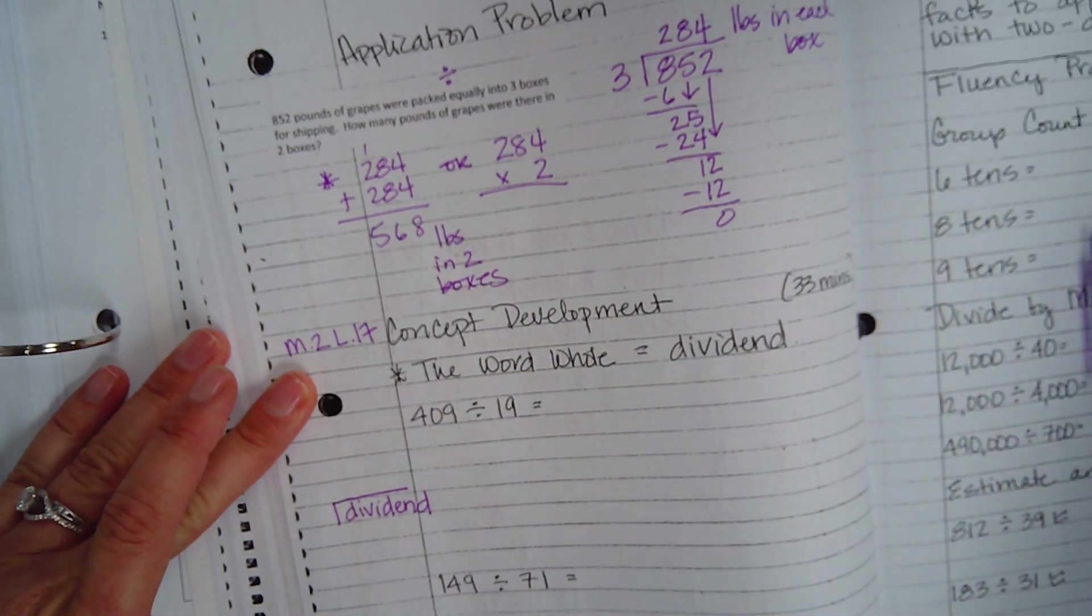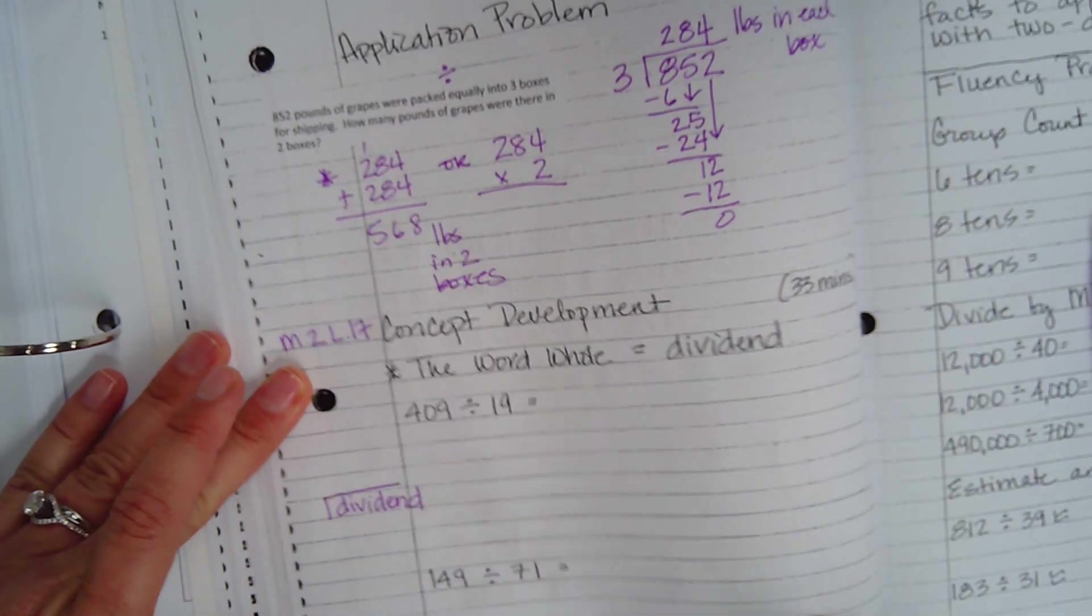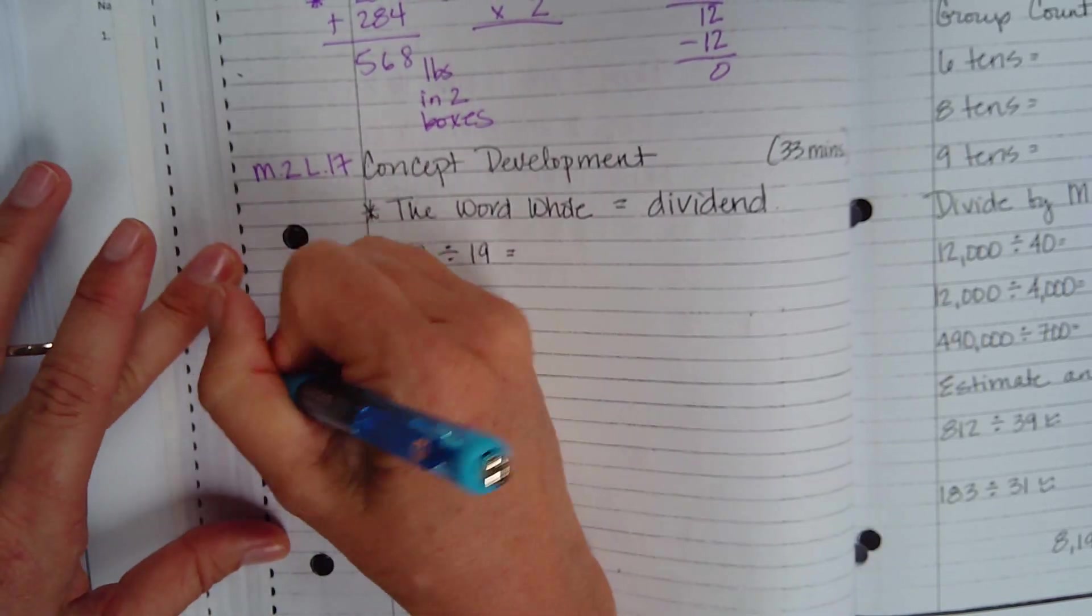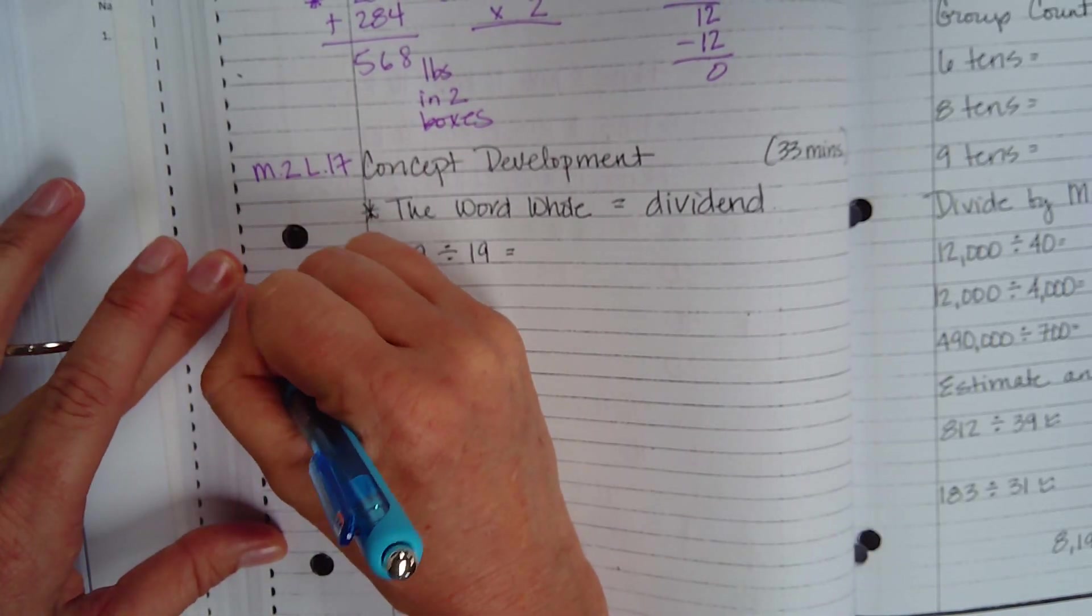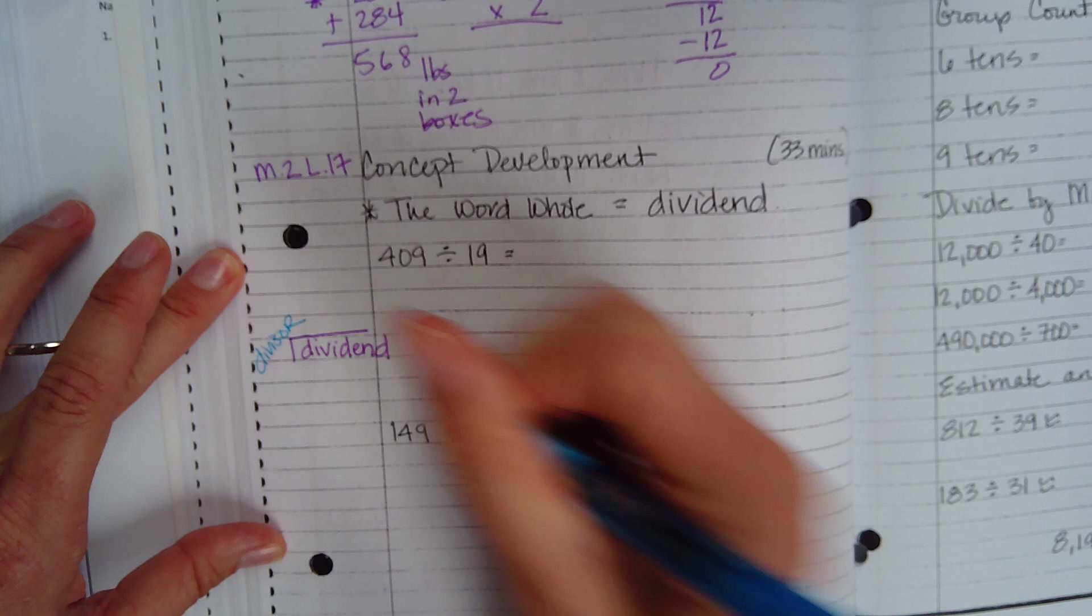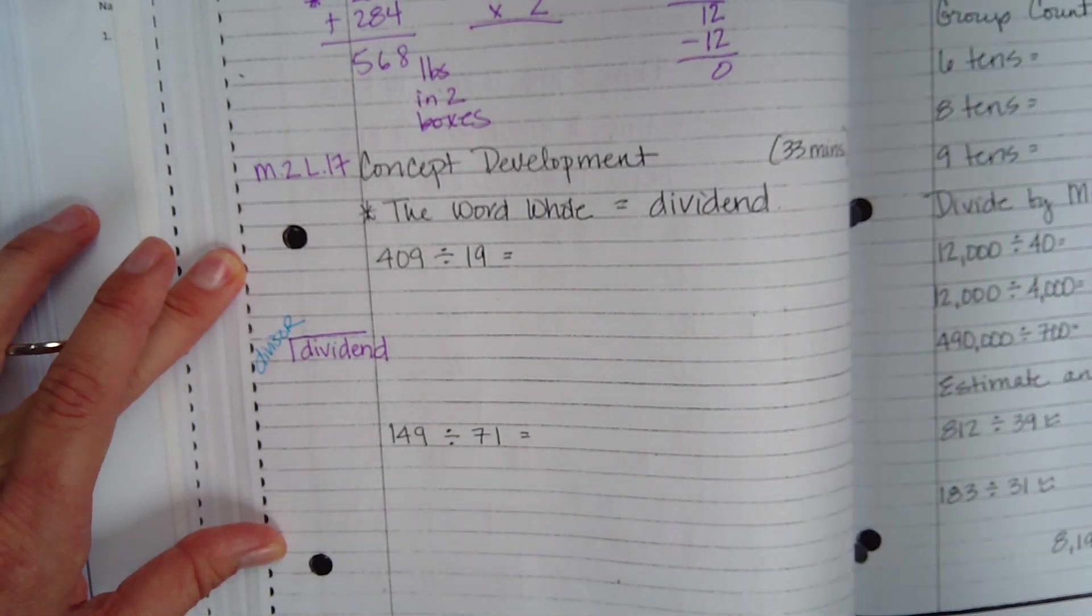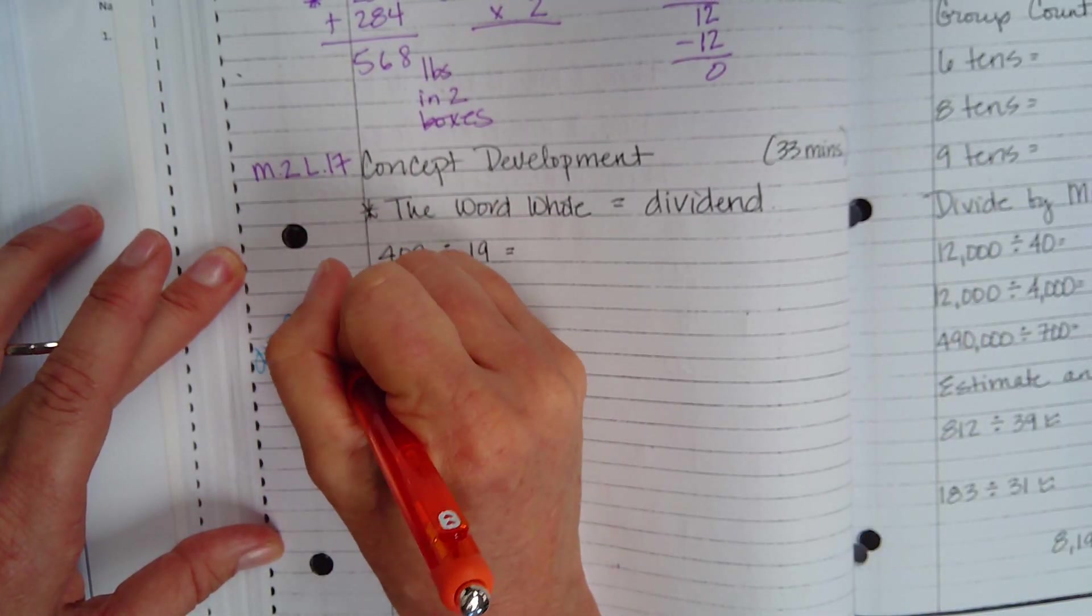I want you to write dividend. I want you to write divisor, and I want you to write quotient.